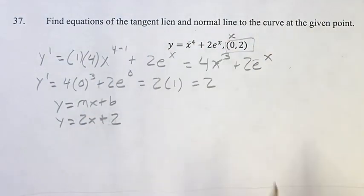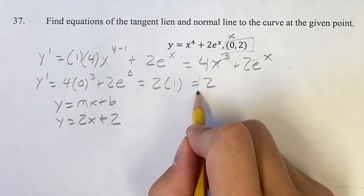Now, how do you find the equation of the normal line? Well, the slope of the normal line is the negative reciprocal of the slope of the tangent line.